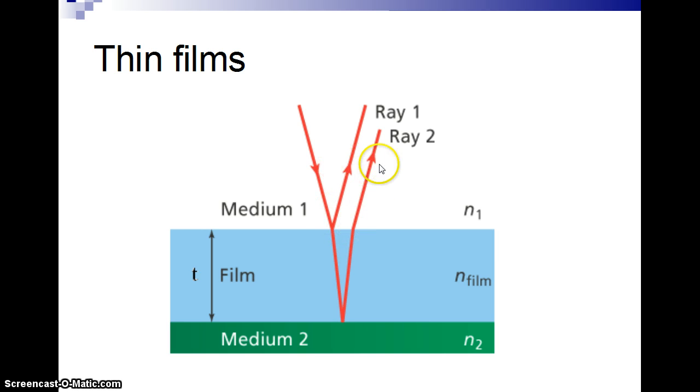And then you'll have these two rays. They're kind of drawn at angles just to show you what's going on, but it doesn't need to be at an angle. But these two rays, there's going to be some path length difference because ray 2 goes through the film. So in some cases, you're going to have it set up where these two can have constructive interference. Sometimes they'll have destructive interference.